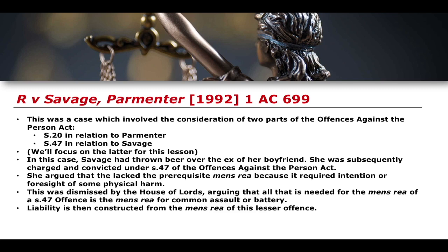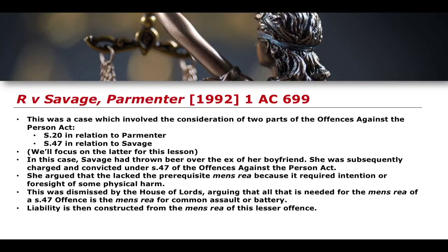Liability is constructed from the lesser offense and its mens rea, and is then built upon to become ABH on the basis of the nature of the physical harm caused — more than transient or trifling. The result is that the mens rea for section 47 is particularly low, requiring only the mens rea for either common assault or battery; the act itself then determines whether the threshold for assault occasioning actual bodily harm has been met. We will get to section 20 in the next lesson on GBH and GBH with intent, noting that the mens rea for that offense is slightly different to that of section 47.